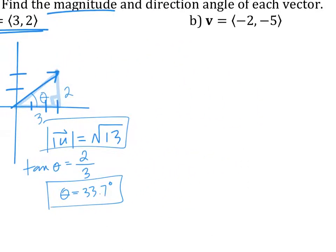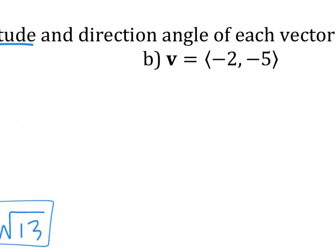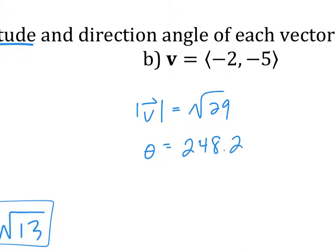Let's have you try another one. This one is a little different — we are not in the first quadrant anymore. Your direction angle still has to be from 0 degrees, so please be careful on what that angle really is. Find the magnitude and direction. Magnitude of V equals square root 29. The direction angle from 0 degrees is 248.2 degrees. Please be careful on the direction angle.